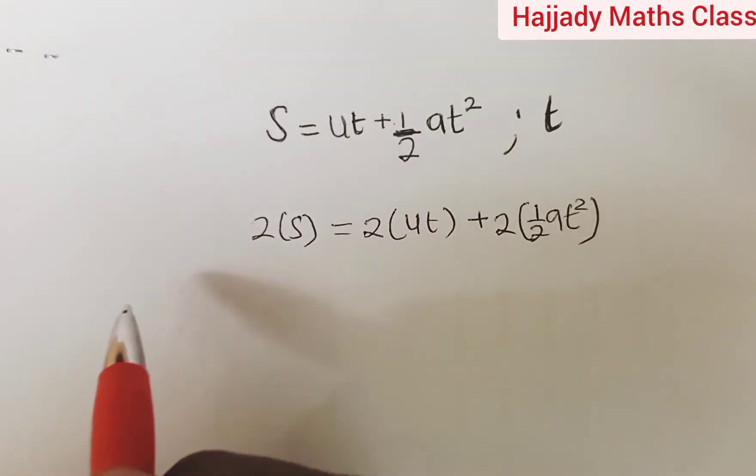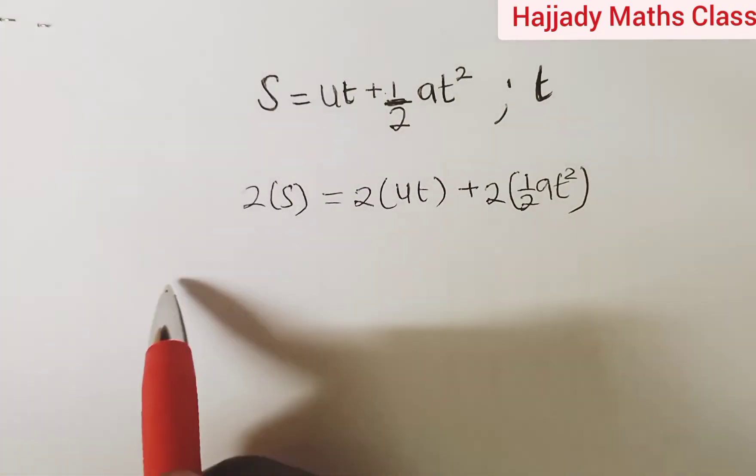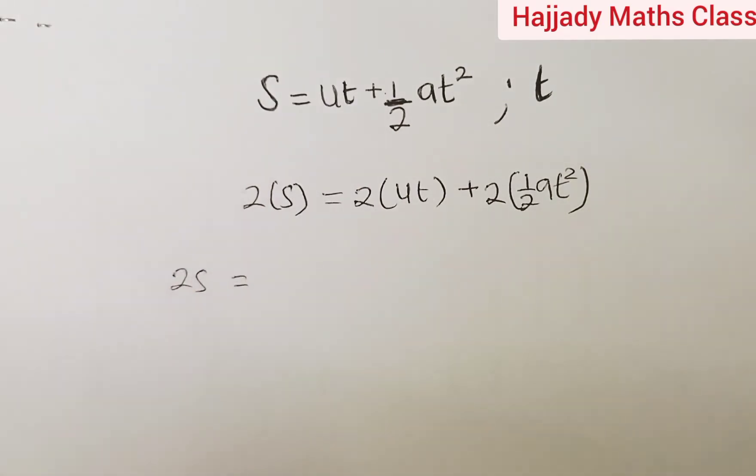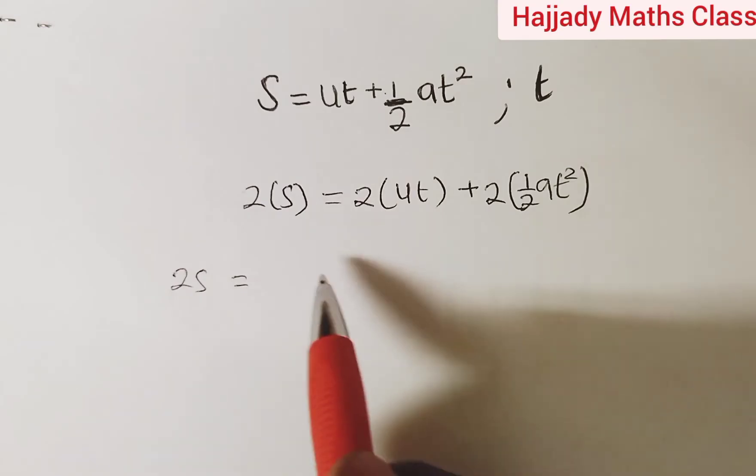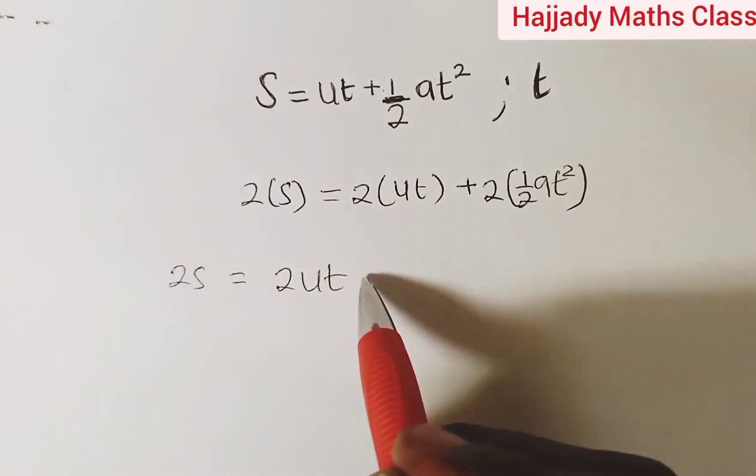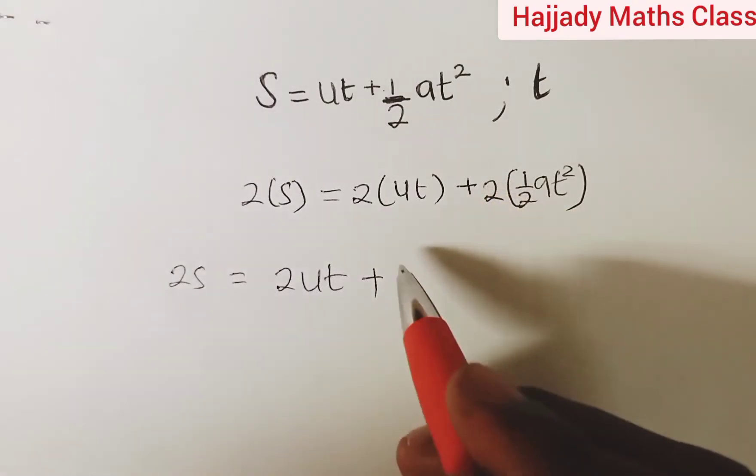And solving this further, we have this to be 2s equals 2ut plus, 2 cancels out here, we have at squared.